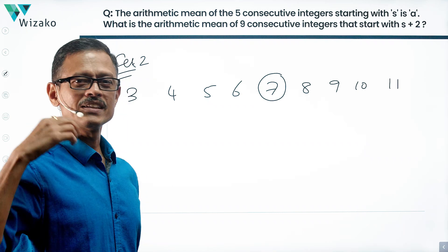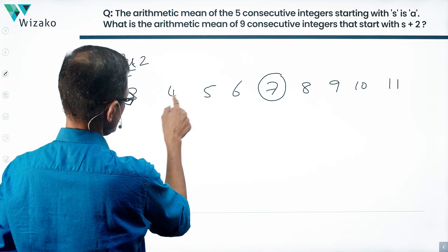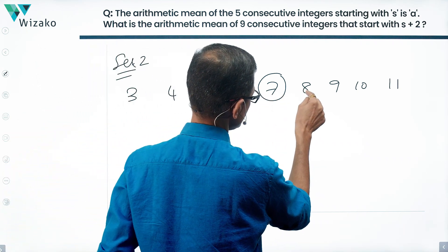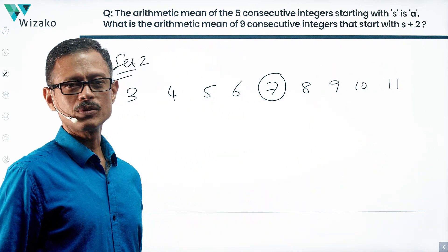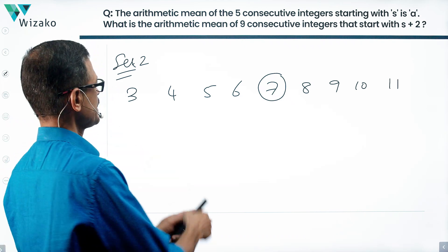Alternatively, if you didn't know this, let's just add it up and find out. 7, 12, 18, 25, 33, 42, 52, 52 plus 11 equals 63. 63 divided by 9 equals 7.